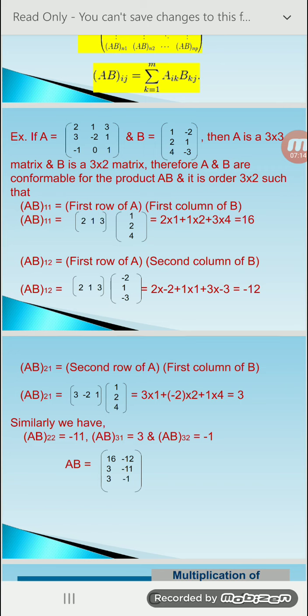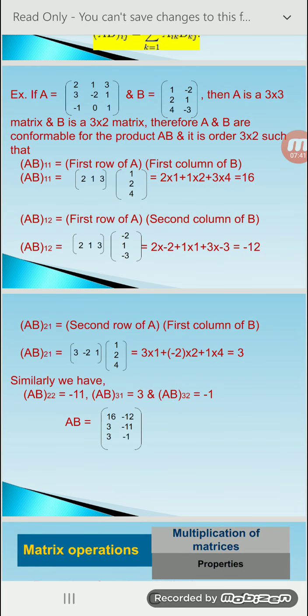Then AB12 is first row of A times second column of B: first row of A is 2, 1, 3 and second column of B is −2, 1, −3. So: 2×(−2) + 1×1 + 3×(−3) = −12. Then we find AB21, which is second row of A times first column of B: second row 3, −2, 1 and first column 1, 2, 4. The value is 3.